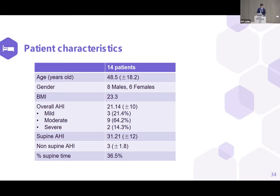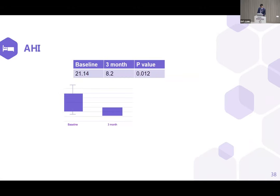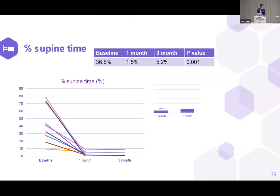Our results are presented in three aspects: respiratory measures, quality of life, and compliance. For the AHI respiratory measure, the baseline was 21.14, and at three months it dropped to 8.2 — a significant drop with a P-value of 0.012. The percentage of supine time dropped from 36.5% at baseline to 1.5% at one month and 5.2% at three months, showing a drastic decrease.